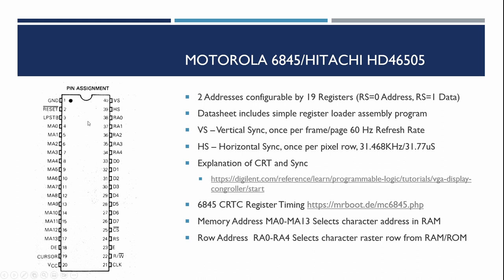The CRTC has the main signals we'll be using — vertical sync and horizontal sync. We'll need to wire up the data lines, chip select, register select, read/write, and E signals. The clock signal is the character clock, which is the dot clock divided by eight — about 3.1 MHz. The memory address lines are for polling the video RAM and reading each character value, and the row address lines determine which line of the character is being displayed from character storage.